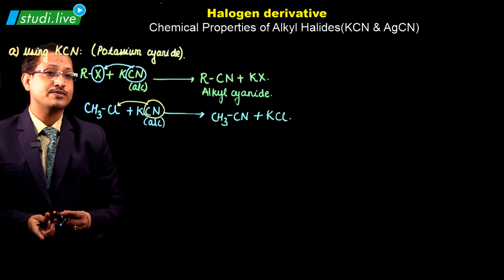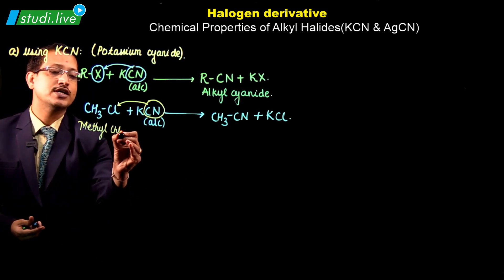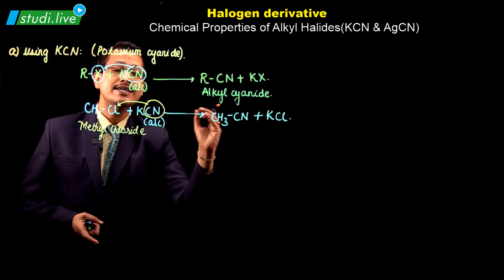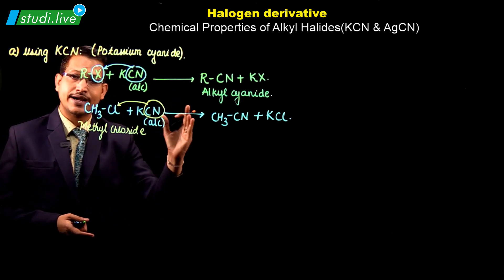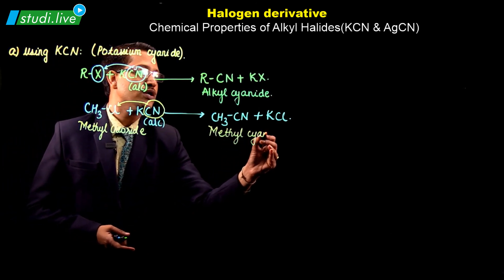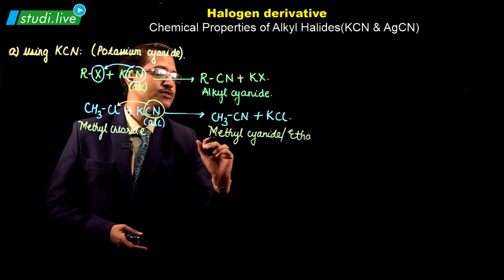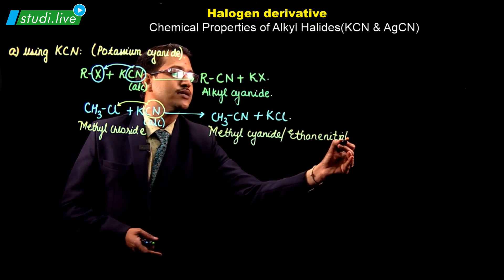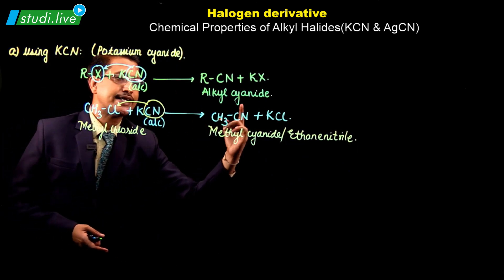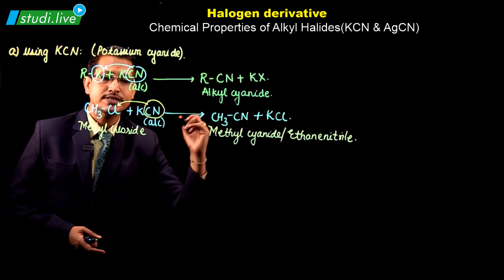The names of the compounds are very important to understand. CH3Cl is called methyl chloride. CH3CN — one way you can call it as methyl cyanide, but also very popularly this is named as ethanenitrile, as it has two carbons. So either you can call it methyl cyanide or ethanenitrile. That is the reaction: CH3Cl + KCN gives you CH3CN + KCl.